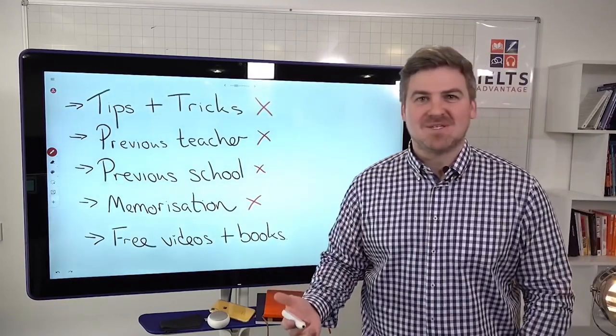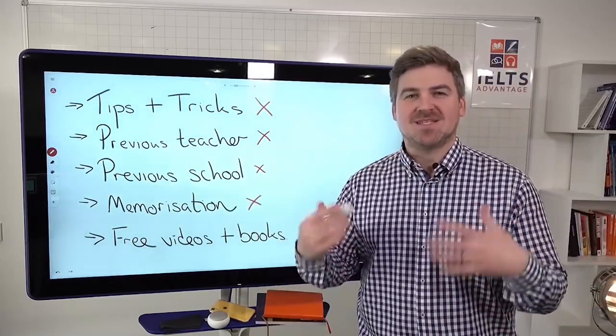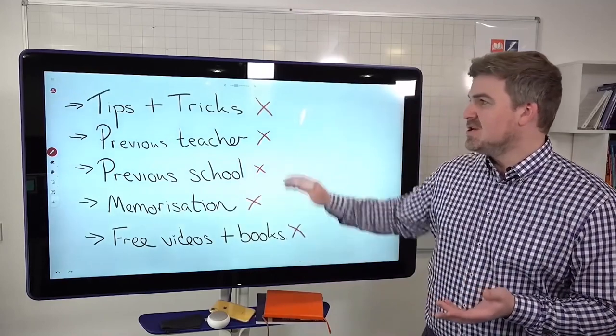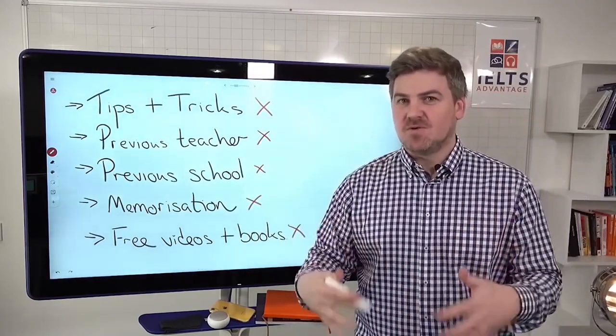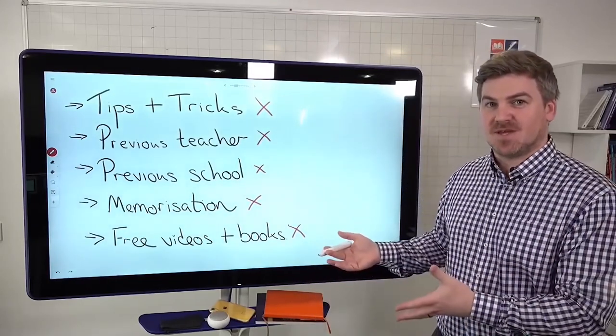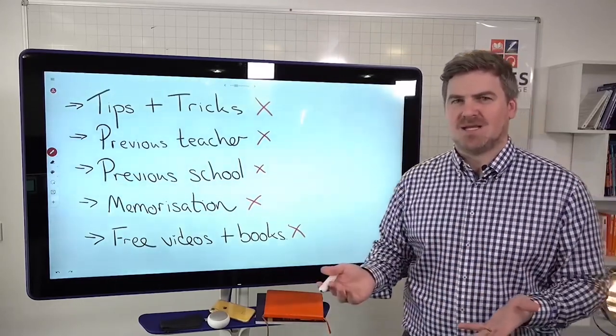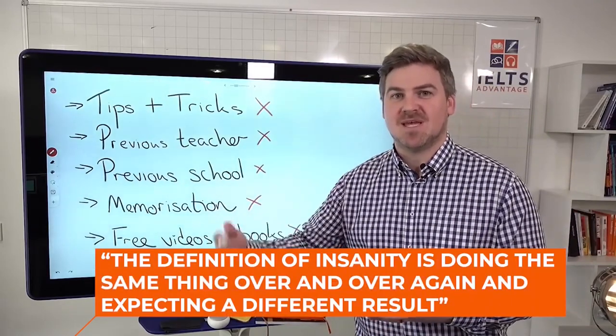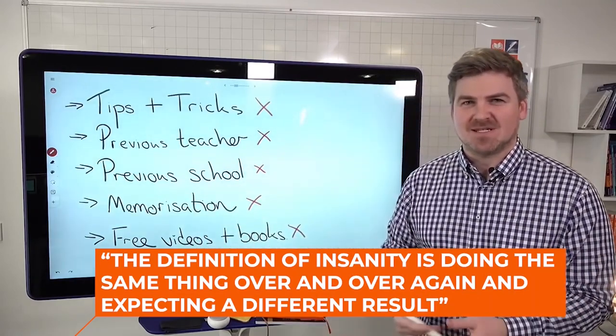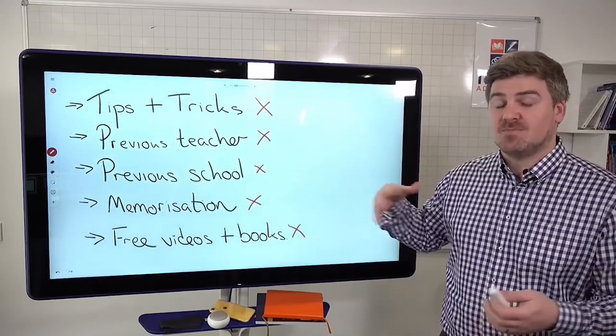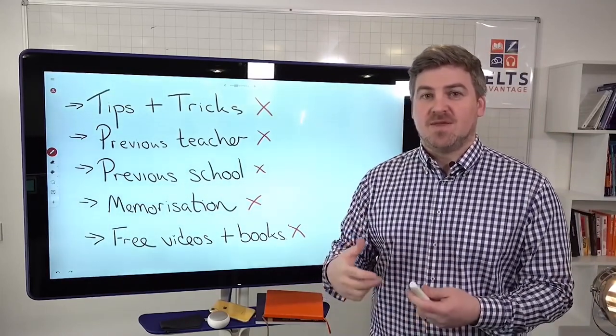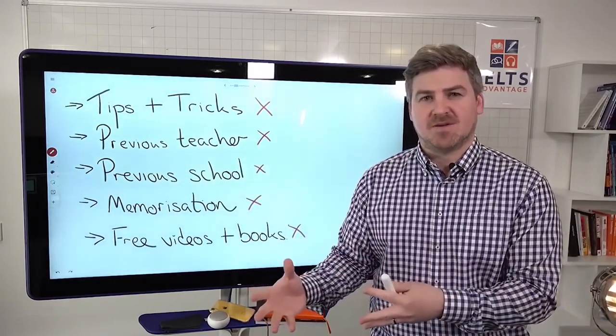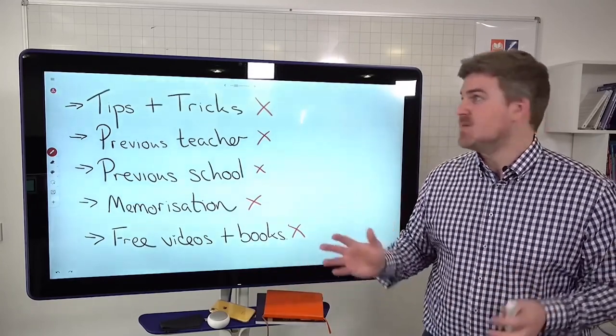Or quite commonly, they'll say I just want to look at some free videos. I did that before. Or some free books that I find on the internet. That's not going to help you either. Doing the same things that you've been doing over and over and over again is going to result in the same thing happening. I think it was Einstein, but he said the definition of insanity is doing the same thing over and over and over again and expecting a different result. This is exactly what happens with most of the people who are emailing us. They just want the same old tips and tricks, but expecting a different result. And when we tell them what to do, they won't do it.